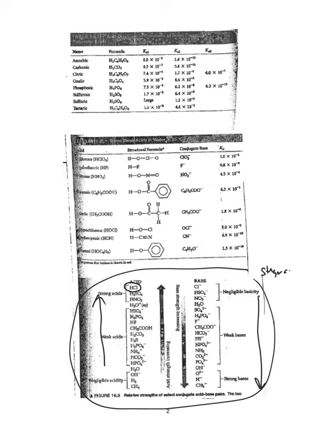Page two of the packet goes over properties we'll utilize throughout the unit. Looking at the graph: the stronger acids are higher up on the left side, with HCl being the strongest acid identified. Vice versa, further down on the product side we have a stronger base. The key relationship: the stronger the acid, the weaker its conjugate base. Conversely, the weaker the acid, the stronger its conjugate base.